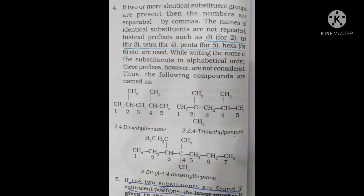Another example: 2,2,4-trimethylpentane has three CH3 groups — two at position 2 and one at position 4 on a 5-carbon chain. The number of carbon atoms is 5, giving the root 'pent'.